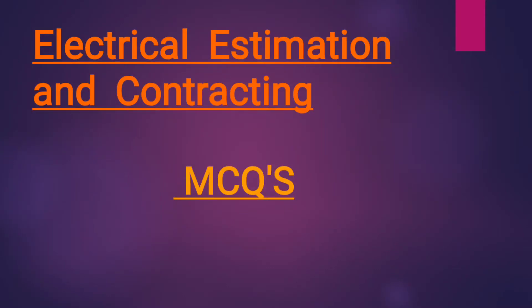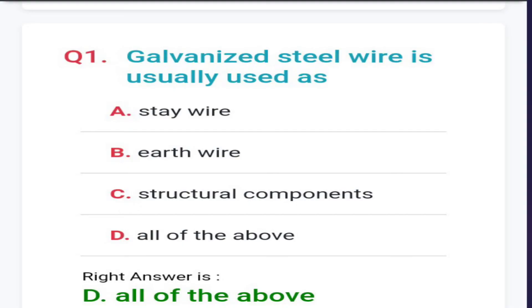Hi guys, welcome to my YouTube channel. Today's video is on electrical estimation and contracting MCQs. The first question: galvanized steel wire is usually used as - options are stay wire, earth wire, structural components, and all of above. The answer is all of above.